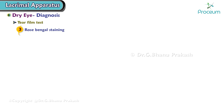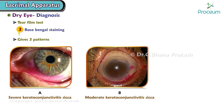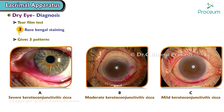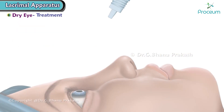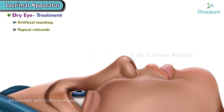3. Rose bengal staining gives three patterns: A. Severe keratoconjunctivitis sicca. B. Moderate keratoconjunctivitis sicca. C. Mild keratoconjunctivitis sicca. Treatment includes artificial teardrops, topical retinoids, and cyclosporin.